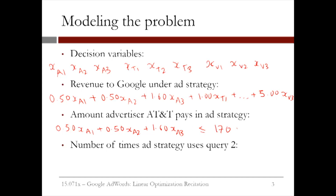We can repeat this to get the same kind of budget constraint for T-Mobile and Verizon. Now, to get the number of times query 2 is used, we add up the decision variables corresponding to query 2. So we have XA2, the number of times AT&T is paired with query 2; XT2, the number of times T-Mobile is paired with query 2; and XV2, the number of times Verizon is paired with query 2. One of our constraints is that this cannot exceed the estimated number of requests for query 2, which is 80. So our model would have the constraint XA2 plus XT2 plus XV2 all less than 80. We can do this for the other queries as well.